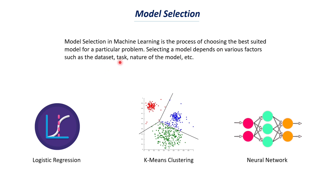Model selection also depends on the task. The task can be a classification task or a regression task. Classification is about classifying something — for example, predicting whether a person has heart disease or not. We have two classes, so this is a classification problem. Regression is where we try to find a numerical value — for example, predicting a house price. Price is a numerical value, so this type of problem is called a regression problem.